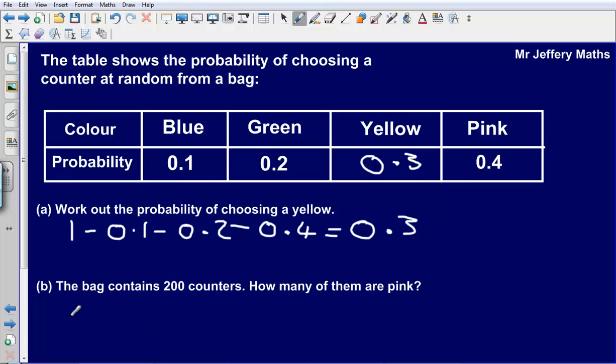The second question, the bag contains 200 counters. How many of them are pink? So the probability of choosing a pink is 0.4.